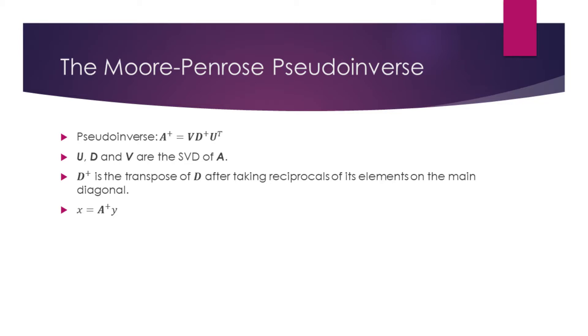In the formula for the pseudoinverse of the matrix A, the U, D, and V are the singular value decomposition of A. The pseudoinverse of D is defined as the transpose of D after taking the reciprocals of its elements on the main diagonal.